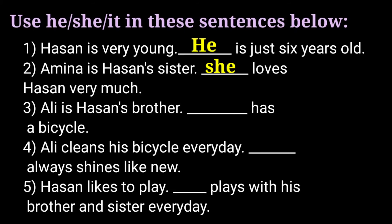Shall we move on to the third question? Ali is Azan's brother. Dash has a bicycle. Ali is the name of a boy. We know that if it is a boy, we have to use he. So the answer is he. Read it again: Ali is Azan's brother. He has a bicycle.